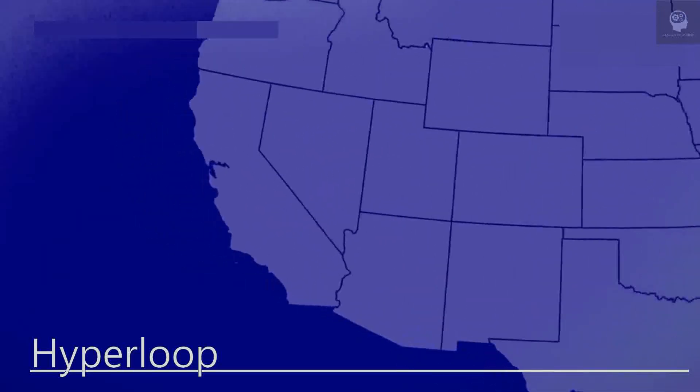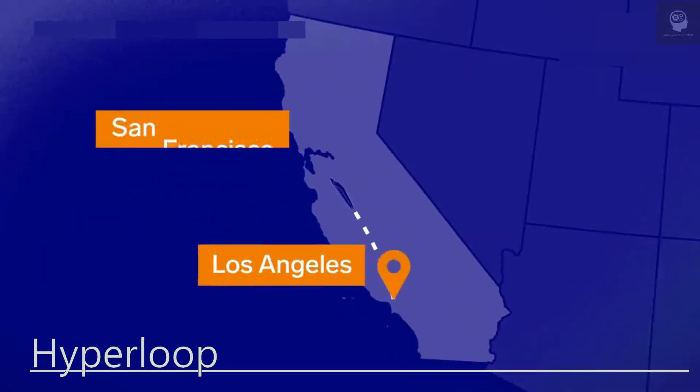For example, a hyperloop between San Francisco and Los Angeles could cut travel time from six hours to just 30 minutes, which would enable people to live in one city and work in another without having to relocate.